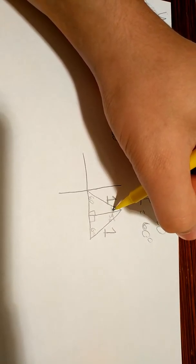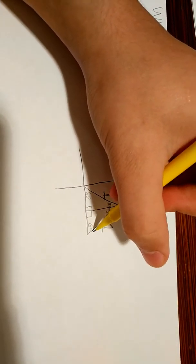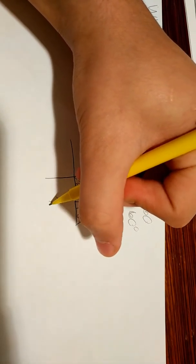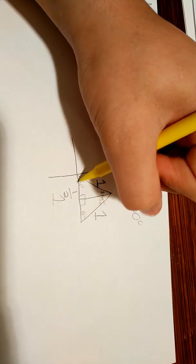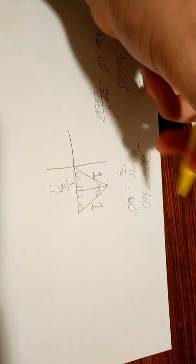And now, since the 30 plus 30 is 60, this is an equilateral triangle. So, this side over here also has length 1, meaning that this right over here, which is half of it, has length 1 half.